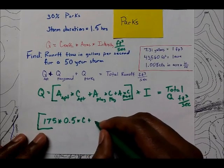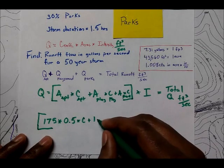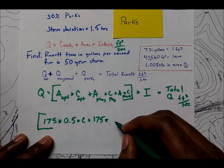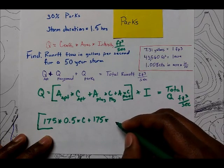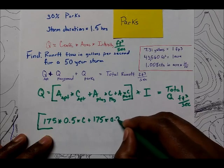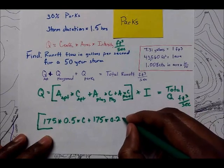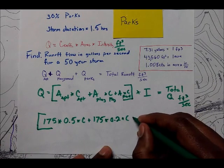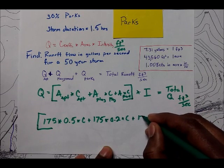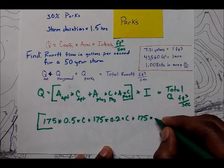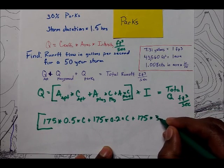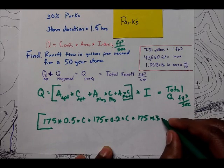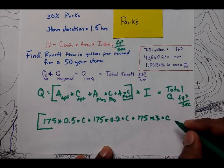Plus the 175 multiplied by the percentage of that area that is taken up by the playground and that is about 20 percent as we said earlier times the coefficient for the playground. And then finally plus the 175 times the 30 percent or 0.3 of the amount that is taken up by parks times whatever that coefficient is.